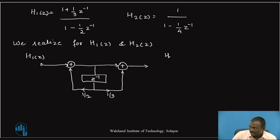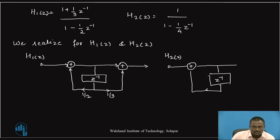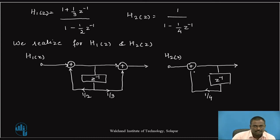Similarly, we realize the direct form 2 for H2(z). The input passes through a delay element z⁻¹, and the feedback coefficient is 1/4. Here we get the output of the system.